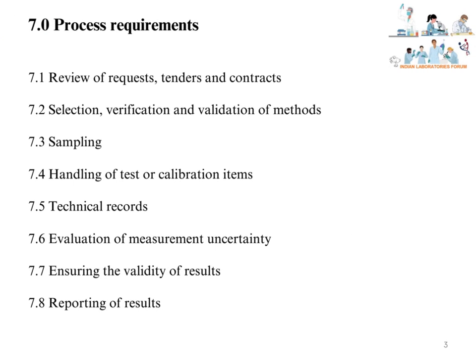Clause 7.0 has a total of 11 sub-clauses. These are: Clause 7.1 — Review of Requests, Tenders, and Contracts; Clause 7.2 — Selection, Verification, and Validation of Methods; Clause 7.3 — Sampling; and Clause 7.4 — Handling of Test or Calibration Items.